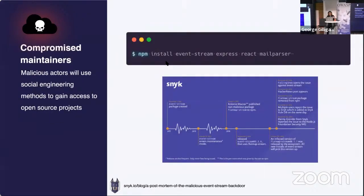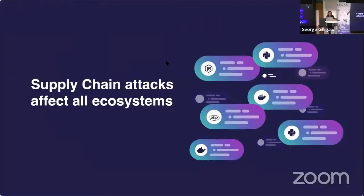Another example is compromising maintainers, where malicious actors use social engineering to gain access to open source projects. In the event-stream package incident, the attacker studied the issues list to find opportunities to contribute. He first built trust by pushing cosmetic changes — readme and CSS files — then gained more permissions and pushed a malicious payload targeting Bitcoin wallets. This is known as a supply chain attack, or third-party attack, which occurs when someone infiltrates your system through an outside partner or provider with access to your system and data.